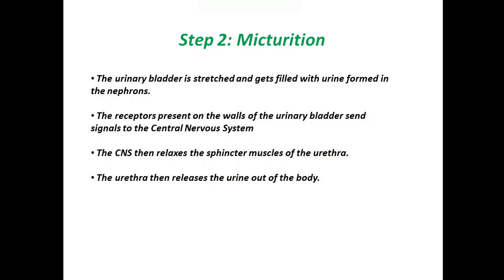Step 2 in the process of excretion in human beings is micturition. The urinary bladder is stretched and gets filled with urine formed in the nephrons. The receptors present on the walls of the urinary bladder send signals to the central nervous system. The CNS then relaxes the sphincter muscles of the urethra, and the urethra then releases the urine out of the body.